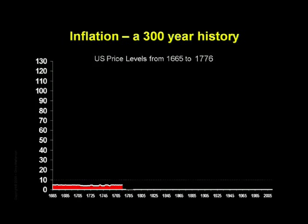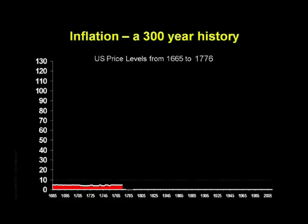In 1665, the basic cost of living was set to a value of 5. What is most striking about this chart is that from 1665 to 1776, there was absolutely no inflation. For 111 years, a dollar saved was a dollar saved. The country was on a gold and silver standard during this period and advanced tremendously while enjoying near-perfect price stability during times of peace.